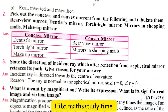Third question: state the direction of the incident ray which, after reflection from a spherical mirror, retraces its path. Give a reason for your answer. The incident ray is directed towards the center of curvature. Reason: the ray is normal to the spherical mirror, so the angle of incidence is equal to 0° and the angle of reflection is also 0°.